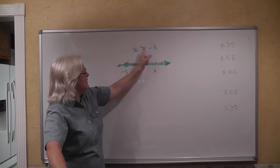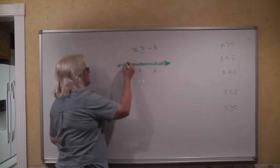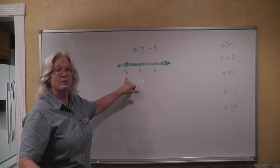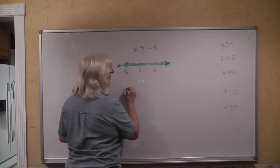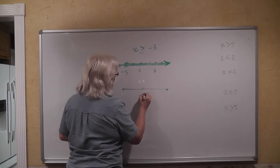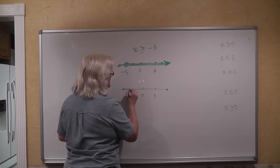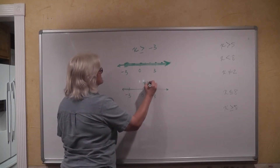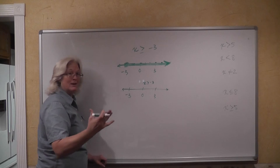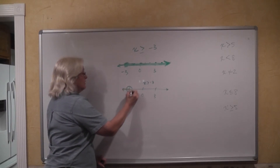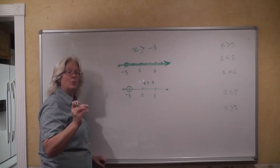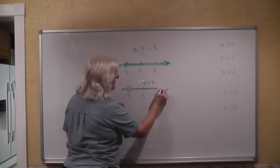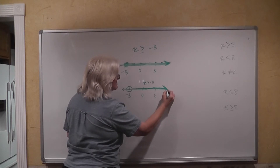Whatever value we have has to be either greater than or equal to. This solid dot means that it's equal to — greater than or equal to negative three. But what if it had been x is greater than only negative three? Is negative three part of our solution when we say x has to be greater than negative three? No, it cannot equal negative three. So we're going to use an open circle at negative three. When we have an open circle, that tells us that that point is not part of the solution, but everything else to the right on the number line is.